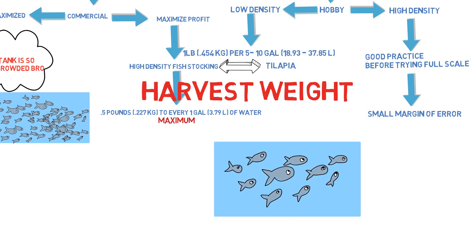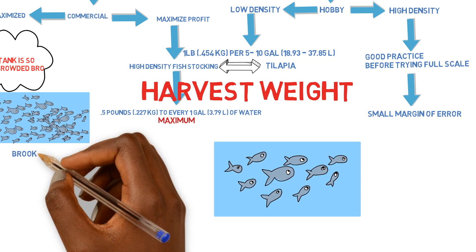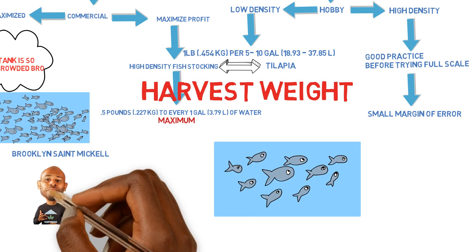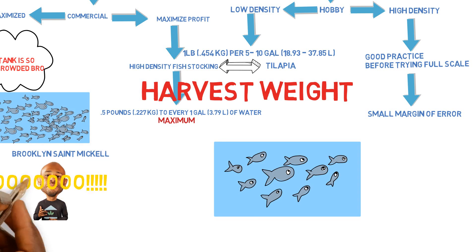This approach works especially well when starting out your system, as it allows you to do a fish cycle. You have a small amount of fish and feed them, and as they grow, your nitrification grows along with your fish — so it all works out perfectly if the system is designed correctly. This is Brooklyn St. Michael with the School of Aquaponics.